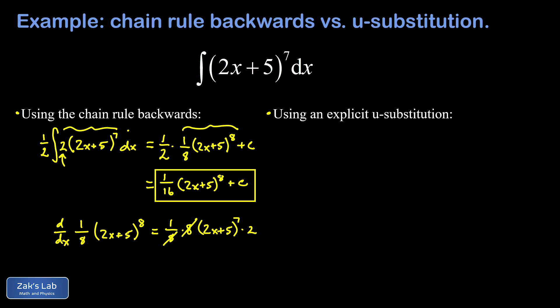With practice, that informal chain rule backwards approach can become much more efficient than making an explicit u-substitution every single time. But I want to follow up by showing how the u-substitution works on this integral. To get a sense of direction, you need to recognize this as a function composition from the beginning, and then give the name u to the inner function. So we say let u equal 2x plus 5.